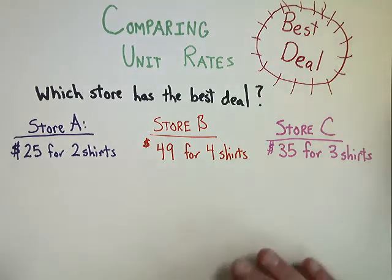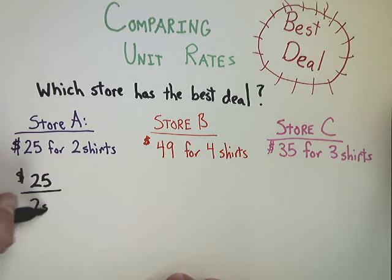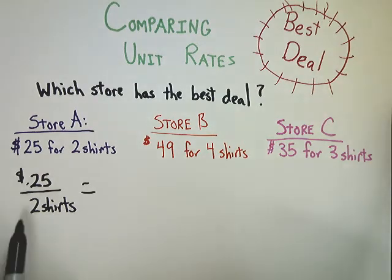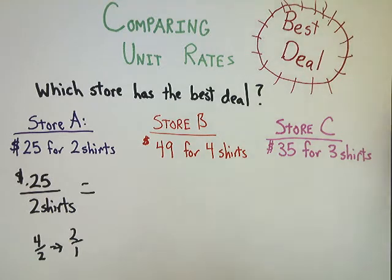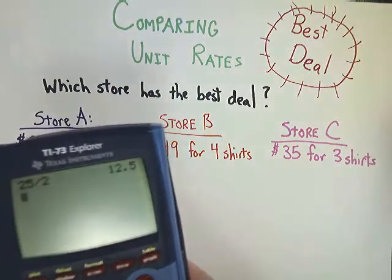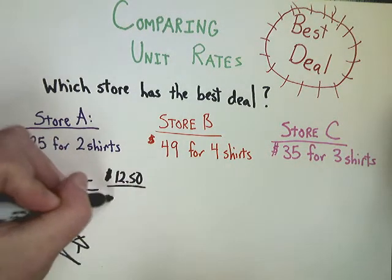So at store A, they're selling two shirts for $25. So I'm going to make a rate out of that, $25 for two shirts. In order to convert that into a unit rate, all I have to do is divide 25 by two because that essentially changes the denominator to a one. So if I have four over two, it would change that into two over one. So I'm going to take 25, divide by two, and I get $12.50 for one shirt.